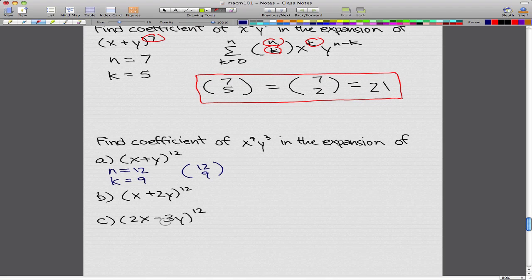Now b is a little bit more tricky, but not that bad. What we want to do here is, again, n would be 12, and k would be 9.